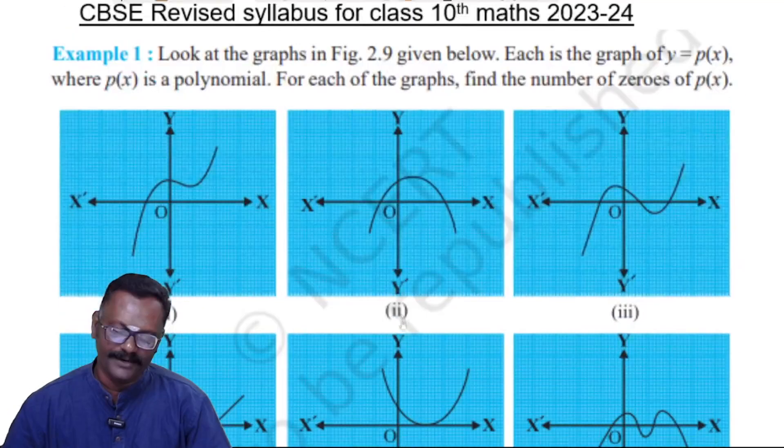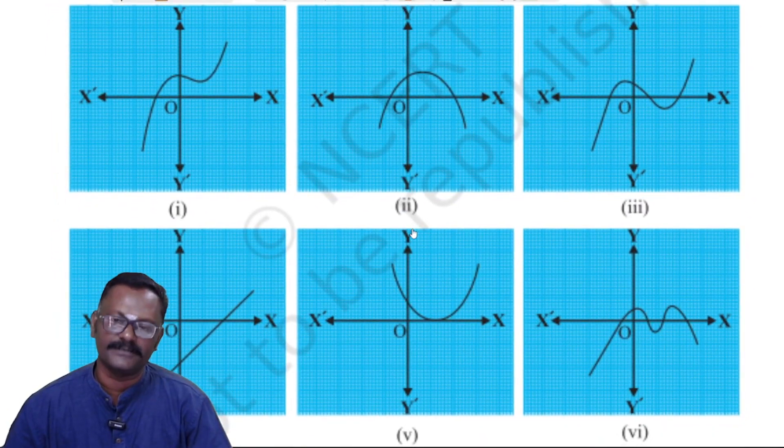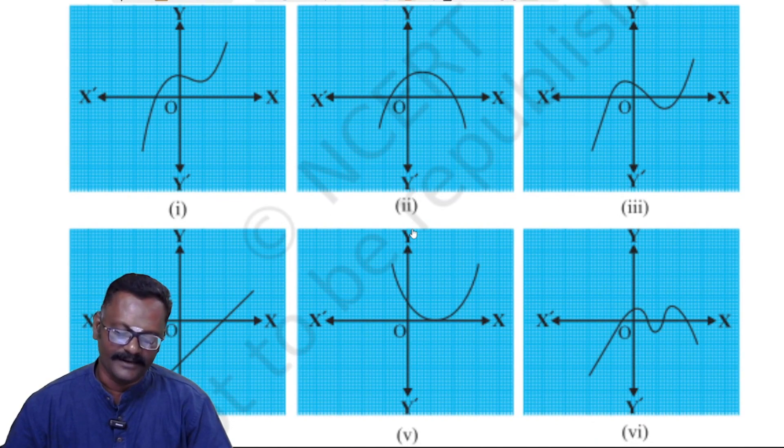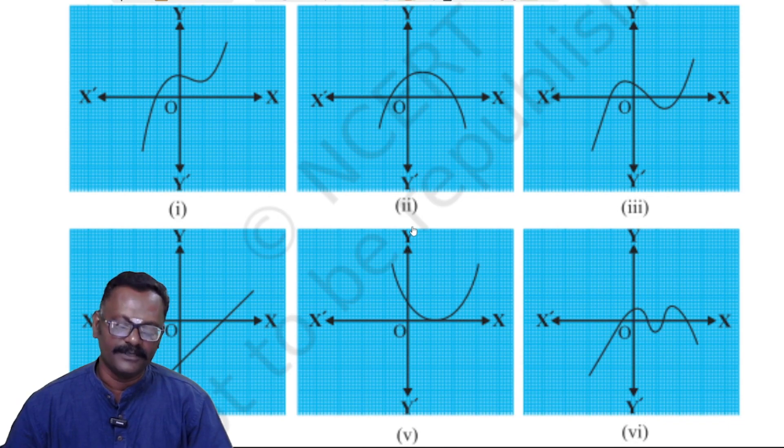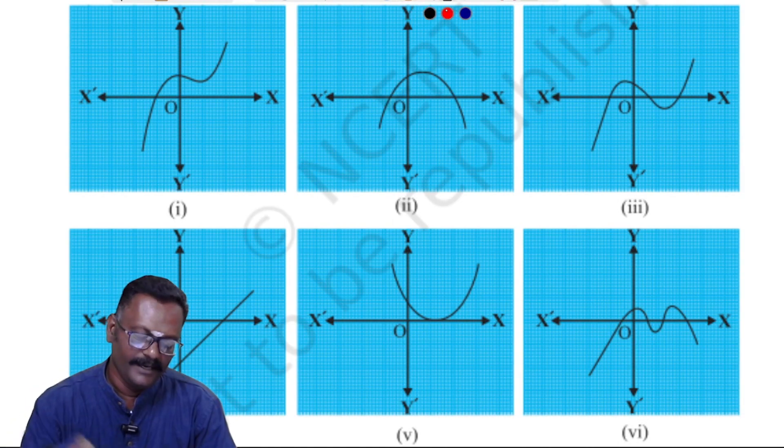If we look at the graph, this is the number of zeros, number of solutions. I am going to talk about concepts. The number of zeros is determined by where the graph intersects the x-axis.